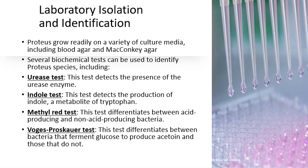The methyl red test differentiates between certain bacteria that produce mixed acids such as acetone and acetic acid, and those that primarily produce lactic acid during glucose fermentation. Proteus species typically exhibit a positive methyl red test, indicating mixed acid production. The Voges-Proskauer test differentiates organisms that can ferment glucose to produce acetoin, which subsequently condenses to form 2,3-butanediol. Proteus is positive for this test and is indicated by a specific color change characteristic of Proteus species.